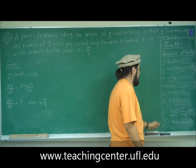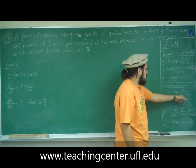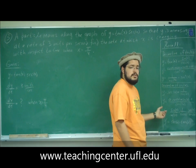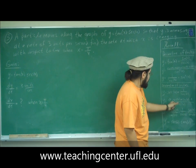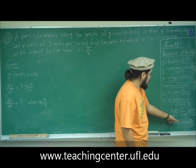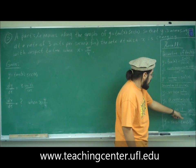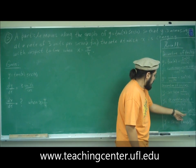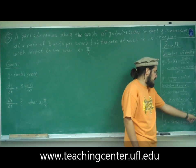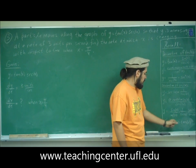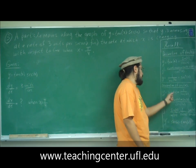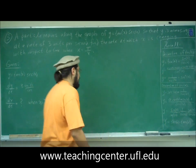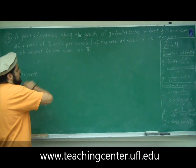The derivative of secant x: we know secant is 1 over cosine x. Using the quotient rule, we obtain sine x divided by cosine squared x. That can be rewritten as 1 over cosine times sine over cosine, which is secant times tangent. So the derivative of secant is secant tangent. We're going to use both of those right now.